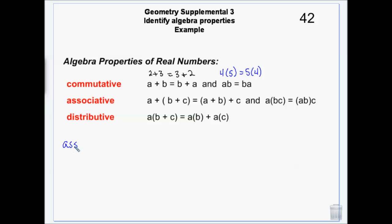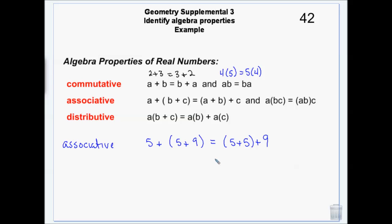Associative property — associations are groups. It doesn't matter what order we add things or which group we add first. If I have 5 plus 5 plus 9, maybe it's easier to add 5 plus 5 first and then add 9. That gives 10 plus 9 rather than 5 plus 14, and 10 plus 9 is easier. Same thing with multiplication — 2 times 5 times 17: multiply 2 times 5 first to get 10, then 10 times 17 is 170. Changing the grouping makes the problem easier.